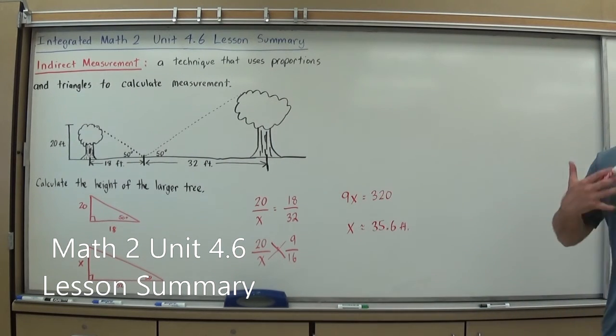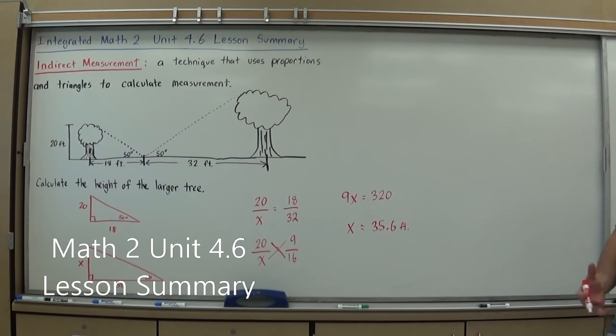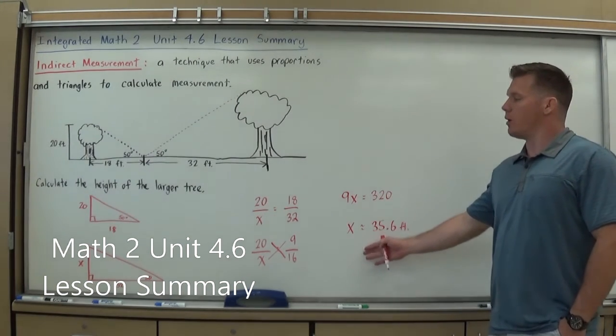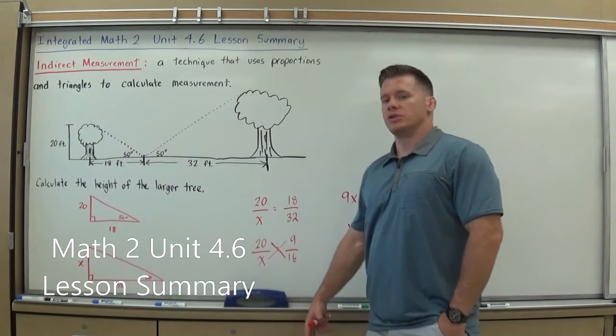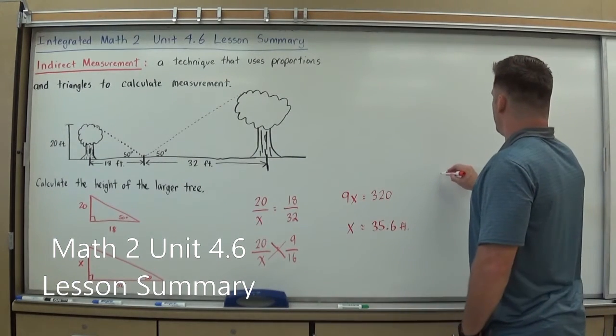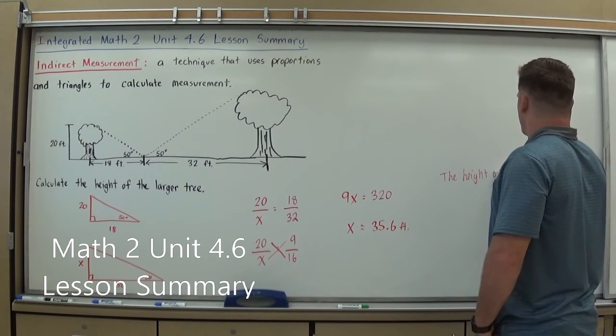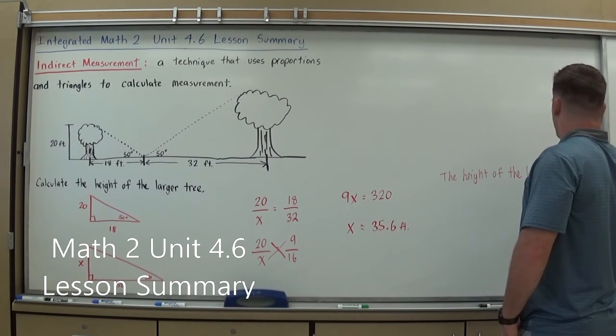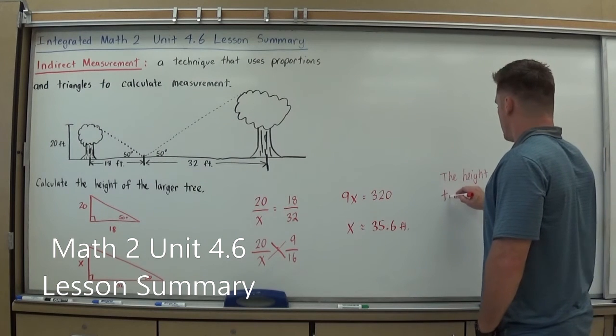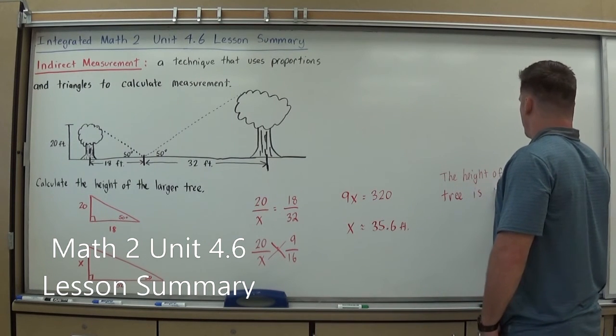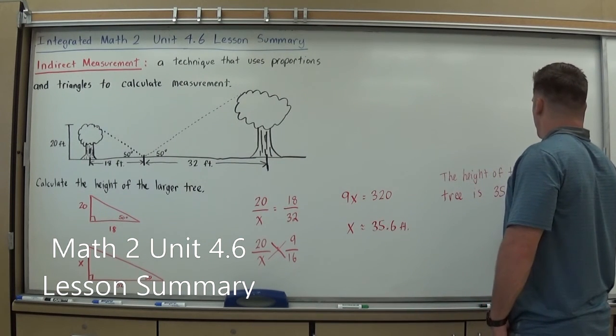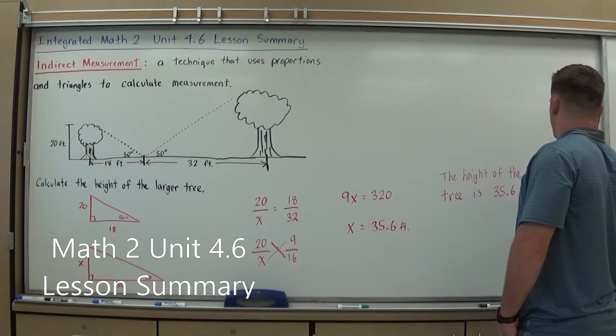Now it's a word problem, and I'm real big on the whole, if it's a word problem, try to answer it in words. Okay, I didn't ask anything about what X is in this problem. I said calculate the height of the larger tree, so tell me that. The height of the larger tree is 35.6 feet.